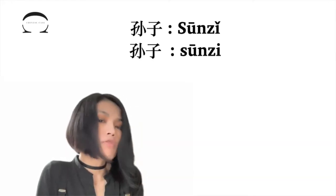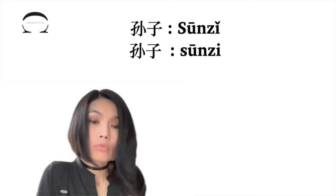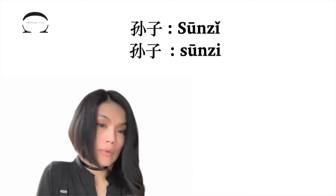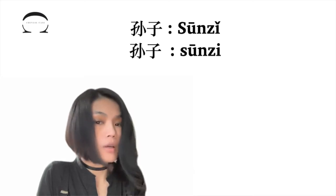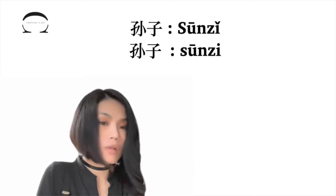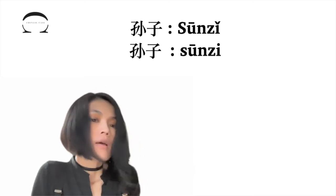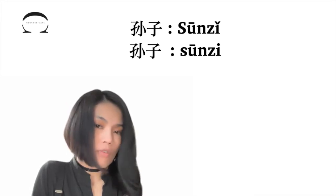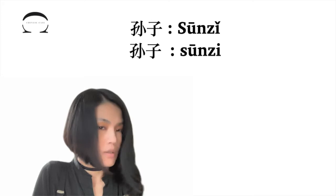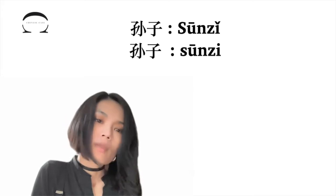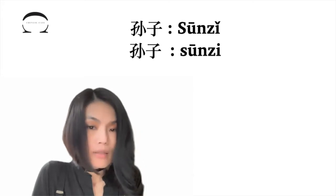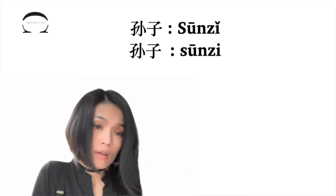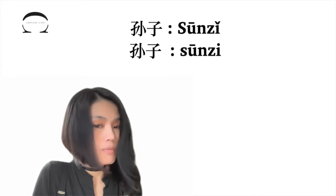Here we have in front of us two words made of two identical characters, with each character corresponding to one syllable. The first word doesn't involve any neutral sound — it's pronounced as 孙子 (sūnzǐ). In the second word, the second syllable is pronounced in the neutral way, and the word is pronounced as 孙子 (sūnzi).